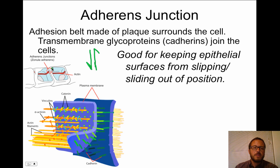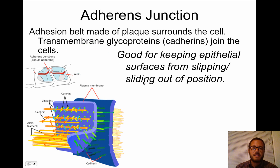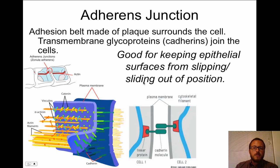You have this adhesion belt that runs around the cell. The cadherins stick out from the plaque belt and catch on each other, keeping things from sliding. In a close-up view, you can see the cadherins interacting with each other in the intermembrane space, preventing sliding motion between cells.